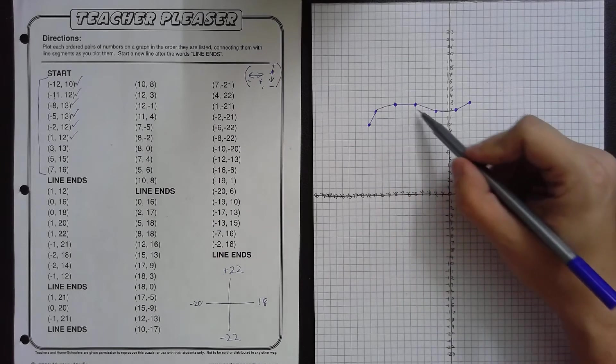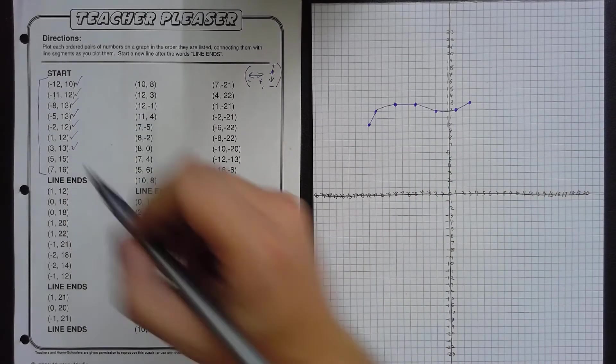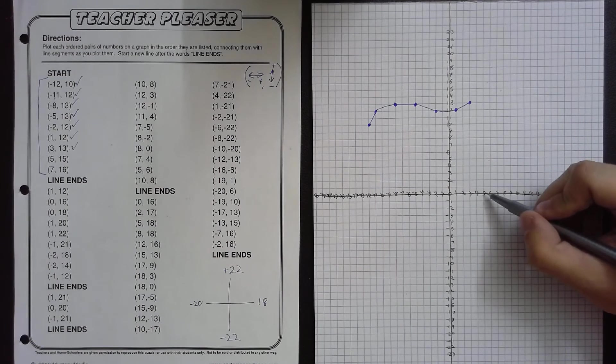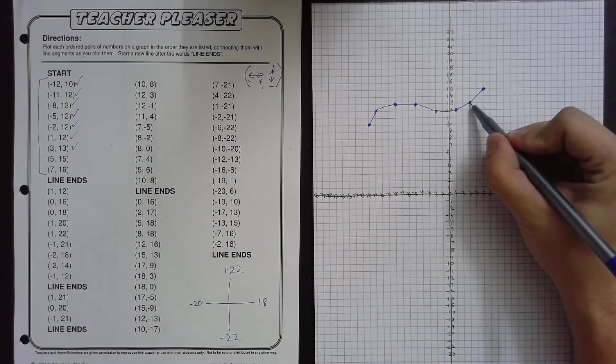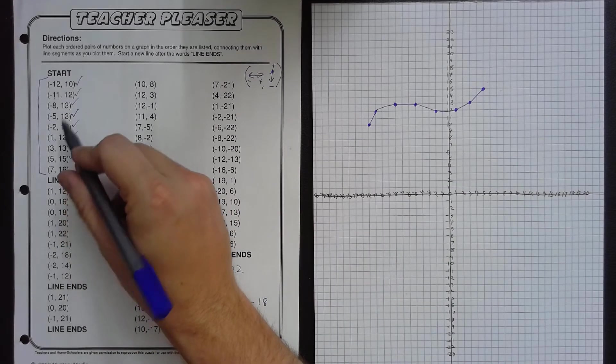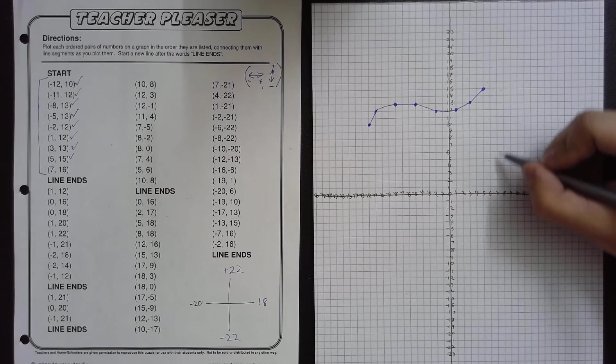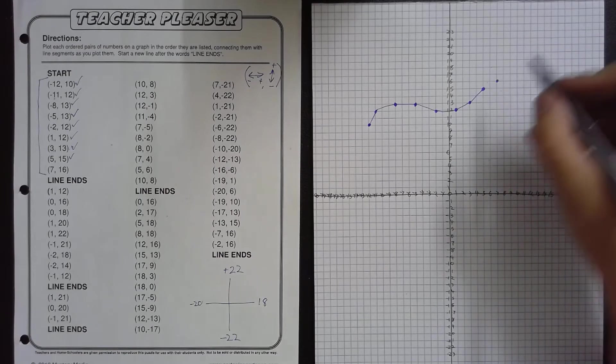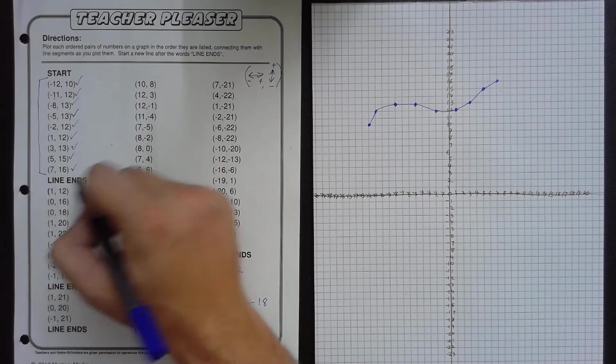After that is 3, 13. So we go 3 to the right, 13 up. And that will be right here. So our line is going to be kind of wavy. And we have 5, 15. So 5 to the side and 15 up. And then last for this sequence is 7, 16. So we go 7 to the right and 16 up.